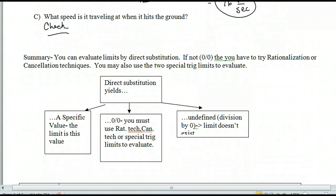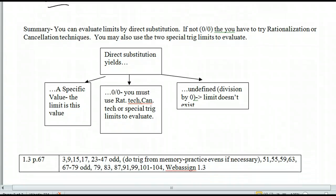Now, finishing up. How do you evaluate these things? Well, what you do is you do direct substitution. This is evaluating a limit. Direct substitution. Plug it in. If you get a specific value, then you're done. If you get 0 over 0, you have to use the rationalization technique or the cancellation technique, or the special trig limits to evaluate. If it's undefined, division by 0, which is not this case, then the limit just doesn't exist. This is 1.3. Thank you very much.